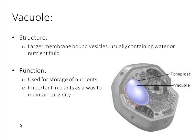Moving to the vacuole, a similar structure to peroxisomes. These are large membrane-bound vesicles usually containing water or nutrient fluid. They are particularly important in plants as a way to maintain their turgidity — their hardness and stiffness, giving stability to their cell. In other eukaryotes such as humans, we might use vacuoles to store nutrients in times of need — for example, storing sugars or salts taken from the environment. The term tonoplast refers to the largest or chief vacuole in a plant cell.